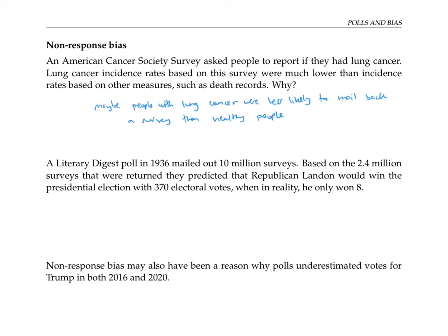Another example of non-response bias comes from a famous Literary Digest poll in 1936. Literary Digest mailed out 10 million surveys and got 2.4 million returned. Based on the surveys returned, they predicted that the Republican candidate Landon would win the presidential election with a full 370 electoral votes — when in reality he only won eight. One reason their poll got it so wrong was that the people who mailed back the surveys were much more likely to be Republican than those who didn't. Non-response bias may also have been a reason why polls underestimated the number of votes for Trump in both 2016 and 2020.